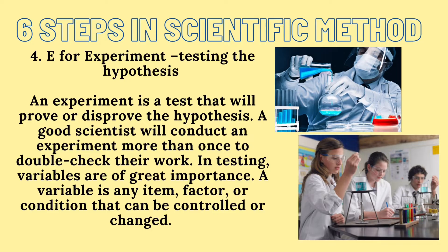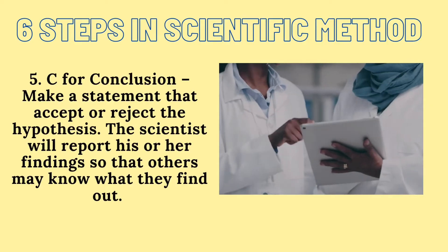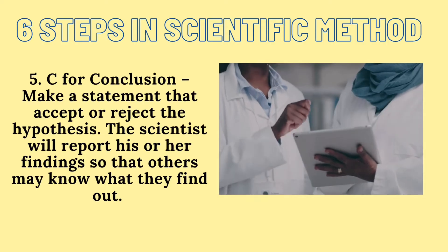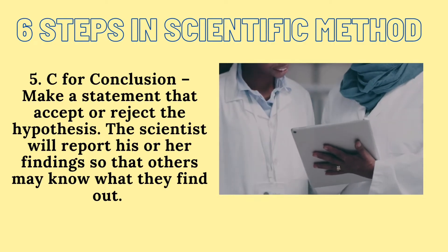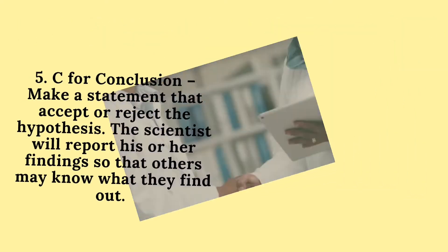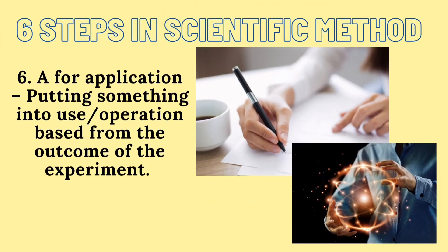In testing, variables are of great importance. A variable is any item, factor, or condition that can be controlled or changed. C is for conclusion — make a statement that accepts or rejects the hypothesis. The scientist will report his or her findings so that others may know what they found out. A is for application — putting something in use or operation based on the outcome of the experiment.